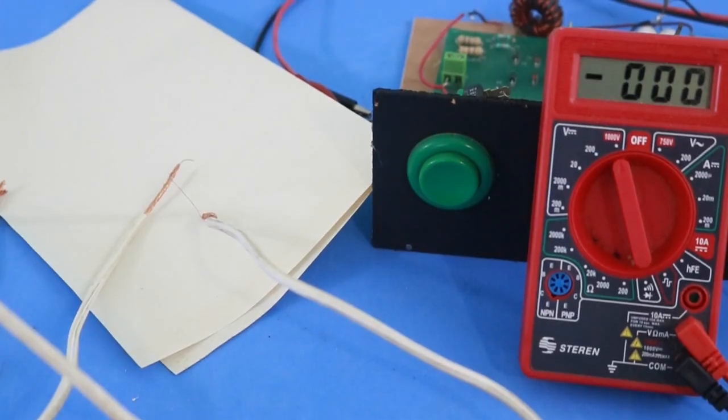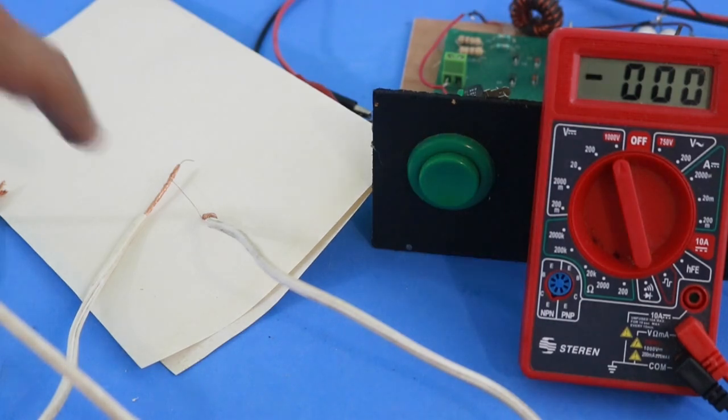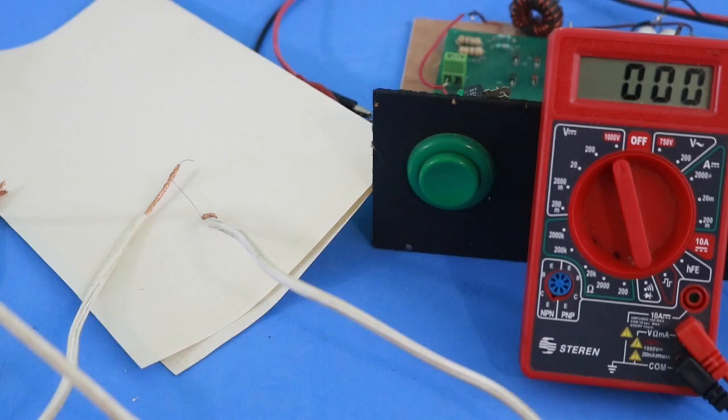I will turn on the capacitor charger until we reach a voltage of 600 to 700 volts, and then when the capacitor bank is charged I will press the button of the spark gap switch and that energy should be enough to vaporize the wire. Let's see.